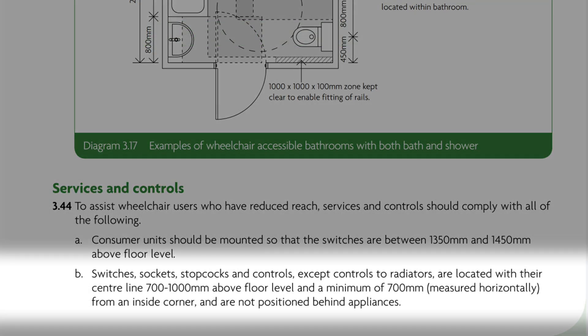Category three dwellings change the rules even more and require that switches and sockets are mounted with their centre line 700 to 1000 millimetres above floor level, and be no closer than 700mm from an inside corner.